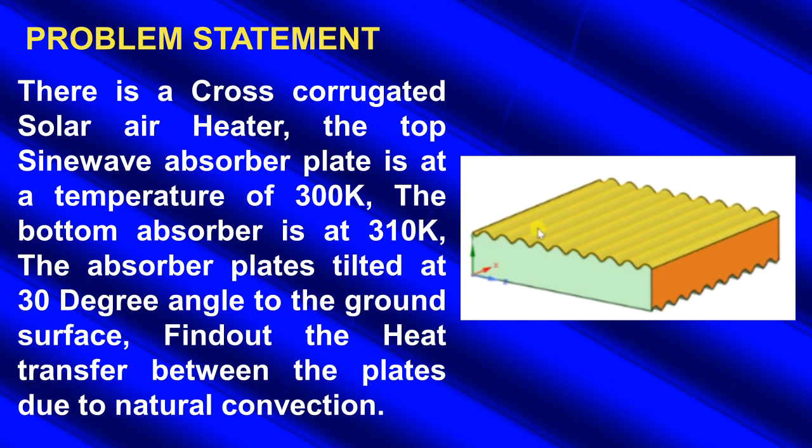It is a cross-corrugated solar air heater. The top sine wave absorber plate is at a temperature of 300 Kelvin, and the bottom absorber plate is at a temperature of 310 Kelvin. The absorber plates are tilted at a 30 degree angle to the ground level. We need to find out the heat transfer between the two plates due to natural convection.